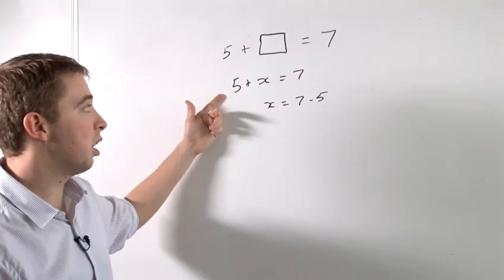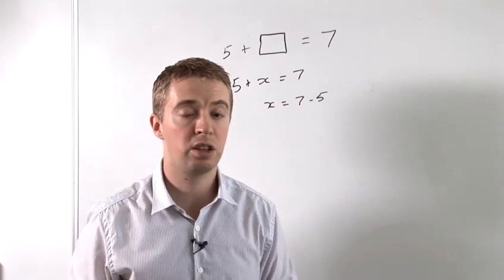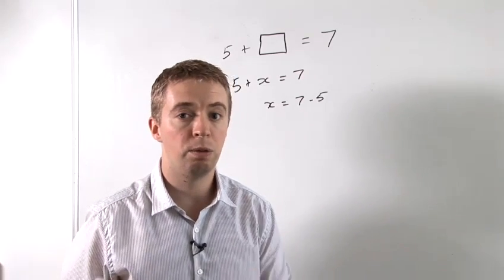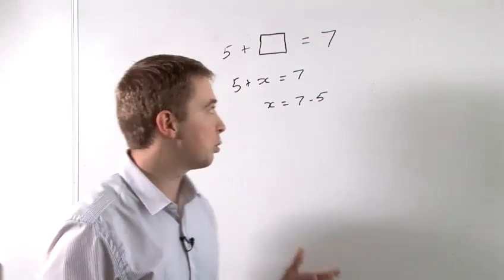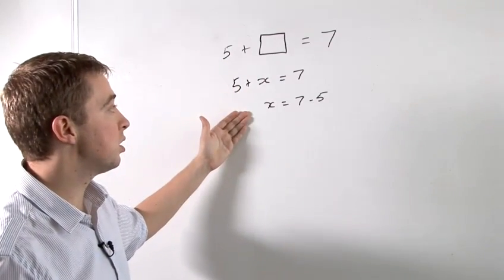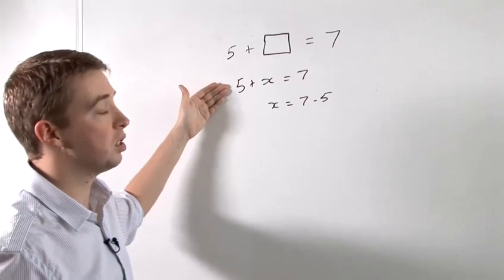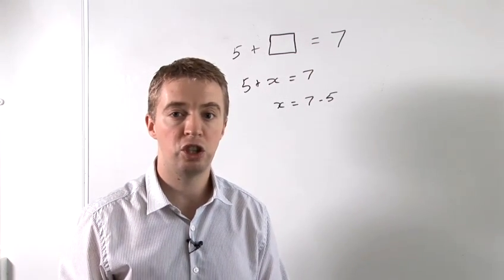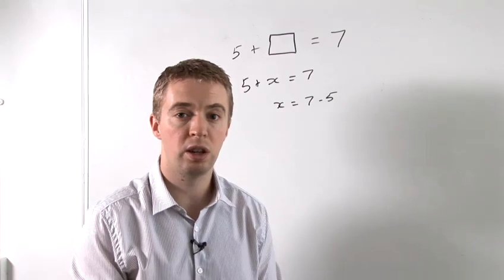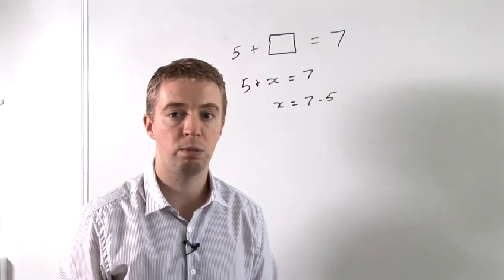If students are looking at this and saying, I'm going to take five to the other side and subtract it, of course that will give them the right answer but with the wrong understanding. We need to explain to them with something like this, you need to look at that equation and say, I'm going to subtract five from both sides and then a student will understand that we still have an equation, we're taking the same thing away from both sides.